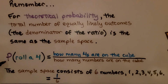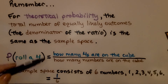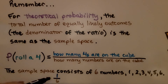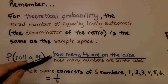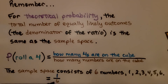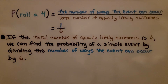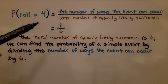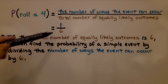For the probability of rolling a four on a number cube: how many fours are on the cube? There's only one. And how many numbers are on the cube? There are six — the sample space consists of one, two, three, four, five, six. So that is our denominator, the total number of equally likely outcomes. The theoretical probability of rolling a four with a number cube is equal to the ratio one sixth.